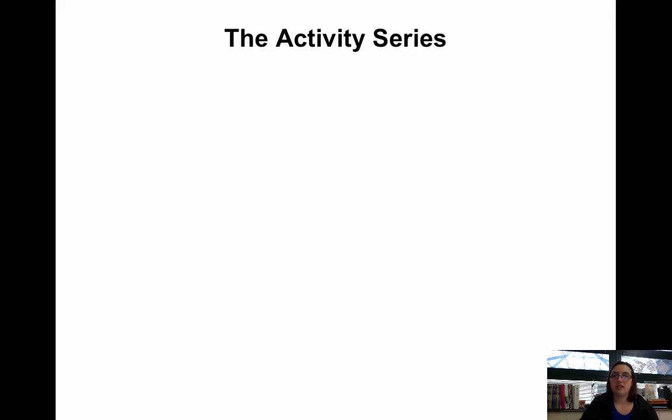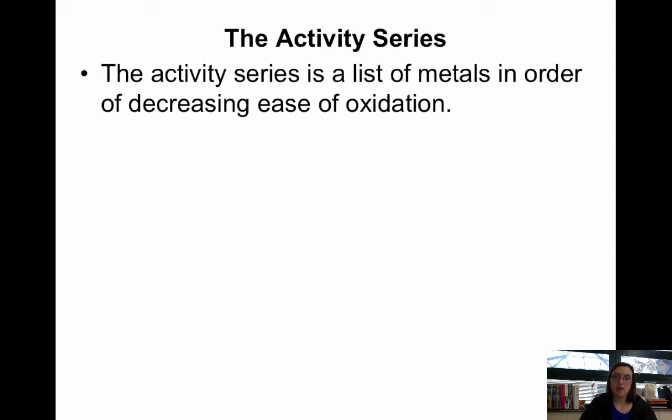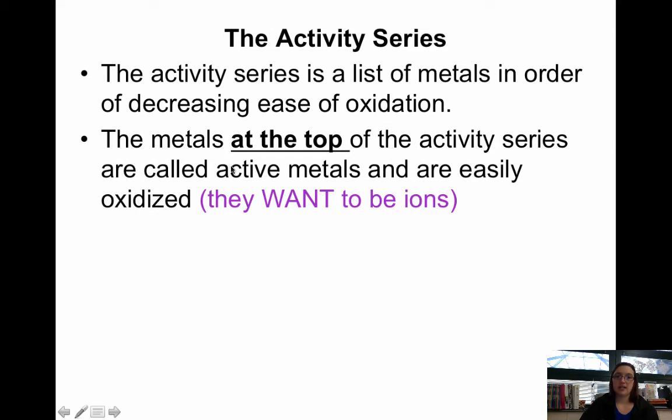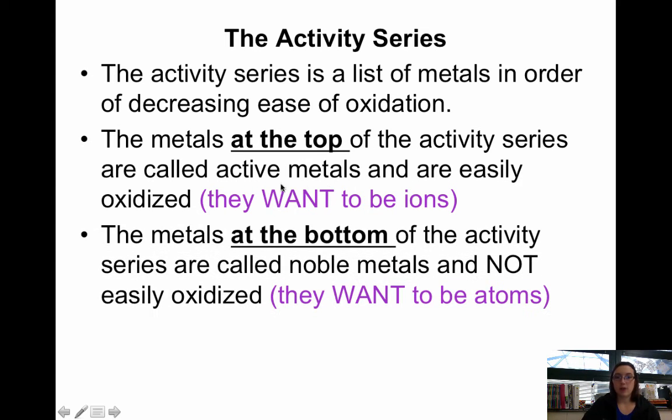We're going to look at the activity series to understand oxidation reduction. The activity series is a list of metals in order of the reactivity of a metal. The activity series lists in order of decreasing oxidation. The ones at the top are very likely to be oxidized, and the ones at the bottom are not as likely to be oxidized. The metals at the top of the activity series are active metals, so they want to be ions. The metals at the bottom are called noble metals. They do not want to be ions. They want to be atoms.